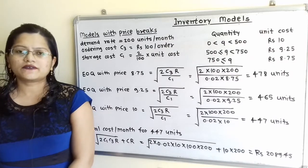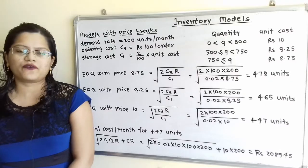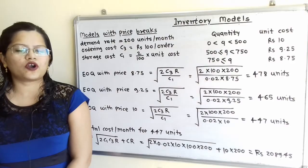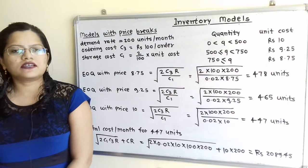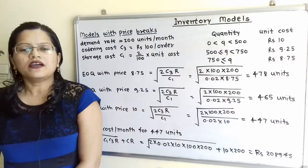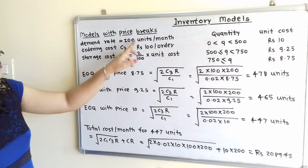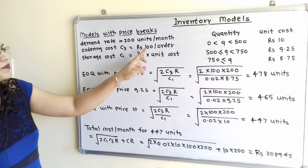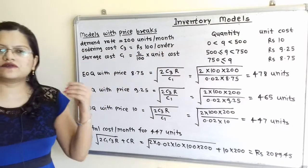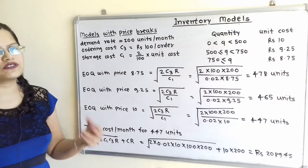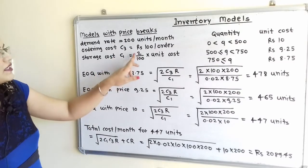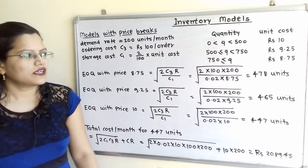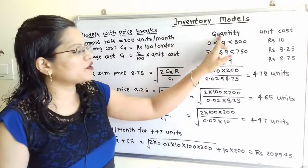In this question, different prices are mentioned for different quantities, so this is a question for Models with Price Break. Let us understand the given data. Demand rate R = 200 units per month. Ordering cost C3 = Rs.100 per order. Storage cost, also called Inventory Carrying Cost or Inventory Holding Cost, C1 = 2% of unit cost, that is 0.02 × unit cost.